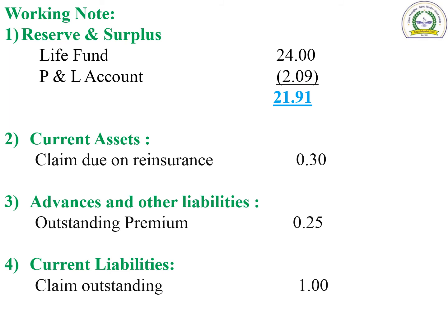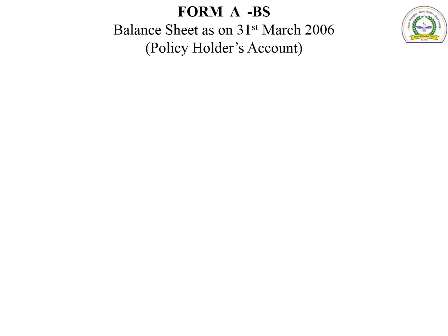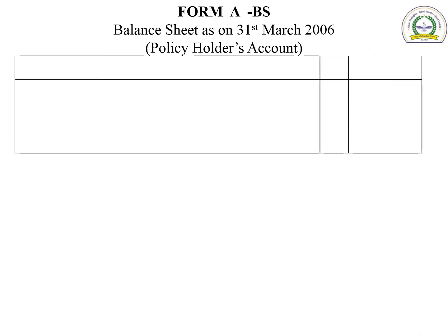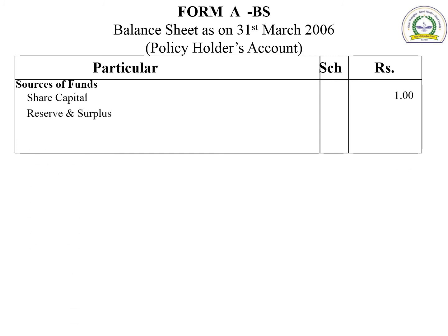Balance sheet prepared as per Form A as on 31st March 2006. Sources of funds: share capital as given in trial balance is 1. Reserves and surplus calculated in working note is 21.91. No borrowings. Total sources of funds: 22.91.